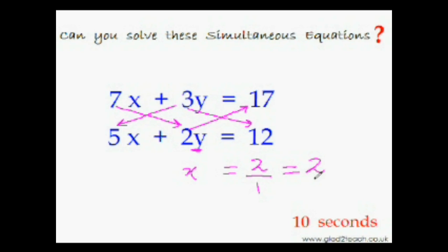So easily I got the value of x. Now putting this value of x in this equation, we get 5 times 2 is 10. 12 minus 10 is 2 and 2 divided by this 2 is 1. So y equal to 1. Question solved.